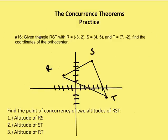On to the next question. Given triangle RST with R = (-3, 2), S = (4, 5), and T = (7, -2), find the coordinates of the orthocenter. The orthocenter is the point of concurrency of the three altitudes of the triangle. Because all three meet at the same place, we only need to select two of the three equations and then solve for the variable.